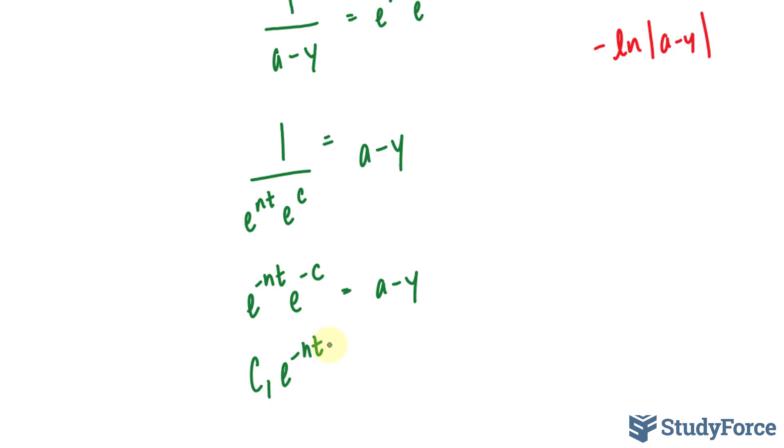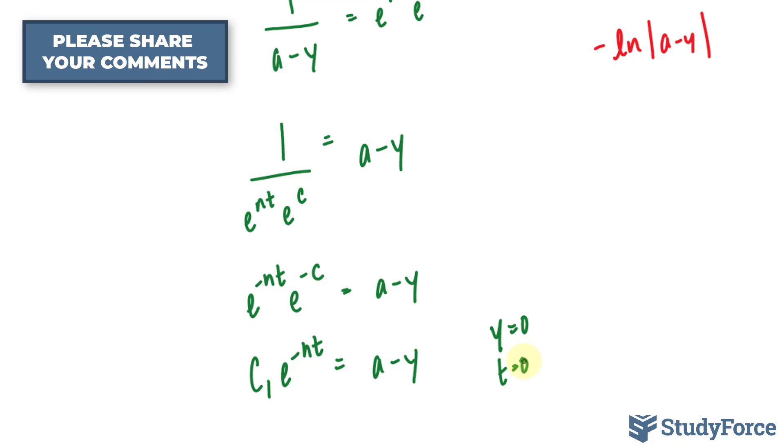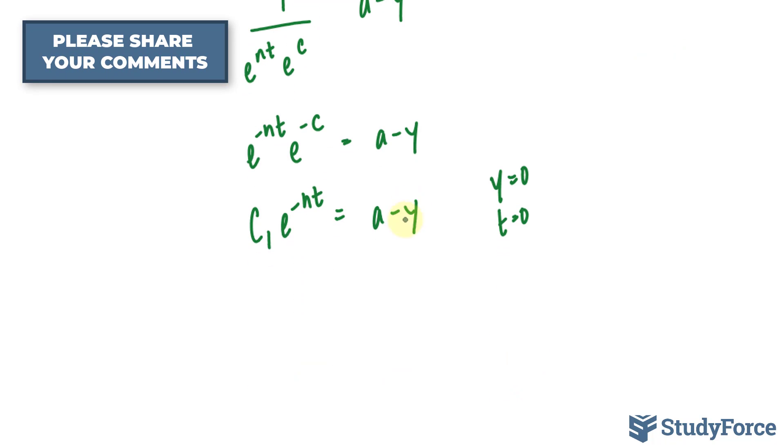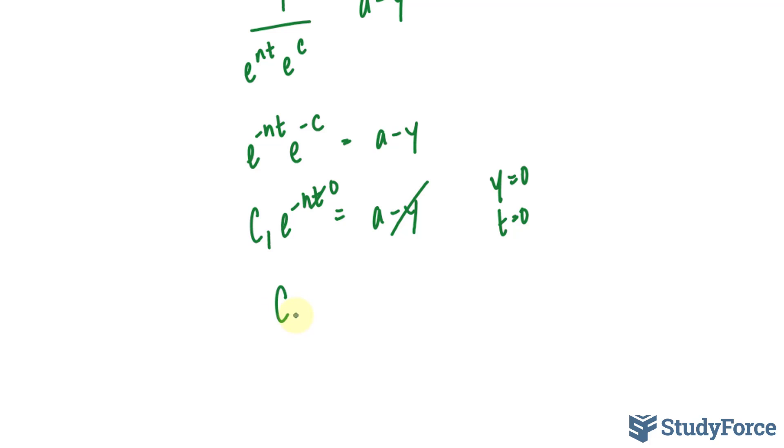Applying the initial condition where y was equal to 0 and t was equal to 0 gives me the following. This part goes away. This part becomes 0, e to the power of 0 is equal to 1. Therefore, c subscript 1 is equal to a.